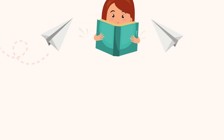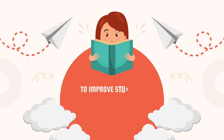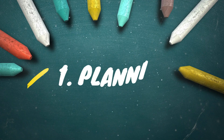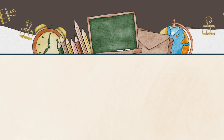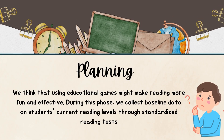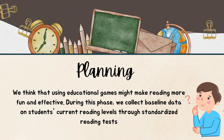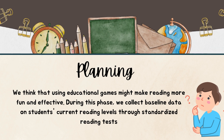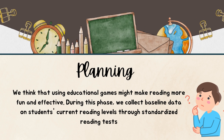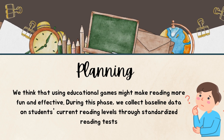Let me give you a concrete example. Let's say we want to improve students' reading skills in our classroom and we'll use game-based learning as our intervention. First, in the planning phase, we notice that students are struggling with reading comprehension. We think that using educational games might make reading more fun and effective. During this phase, we collect baseline data on students' current reading levels through standardized reading tests.